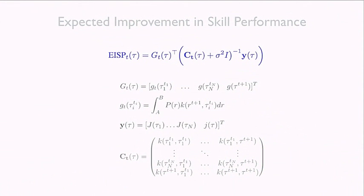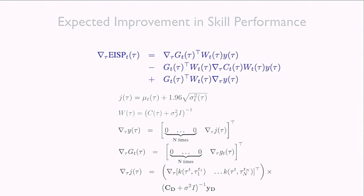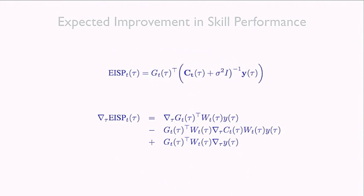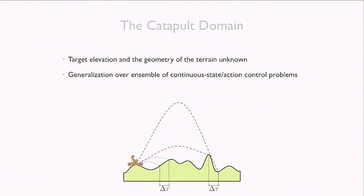We found closed-form solutions for both the expected improvement quantity and its gradient. Since we have gradients, we can plug these into our favorite gradient ascent method and it will give us the task we should practice next — the task that if practiced yields the highest expected improvement in our capability of solving this variety of problems.